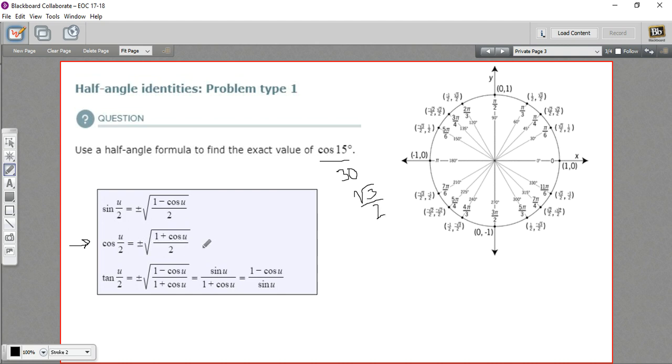Now we've got that positive, negative, and the big square root. We can know this is going to be positive. 15 degrees is in quadrant 1, so this is going to be a positive value for cosine. We'll just leave it like that. And then we've got 1 plus the cosine of u, so 1 plus the square root of 3 over 2, all over 2.